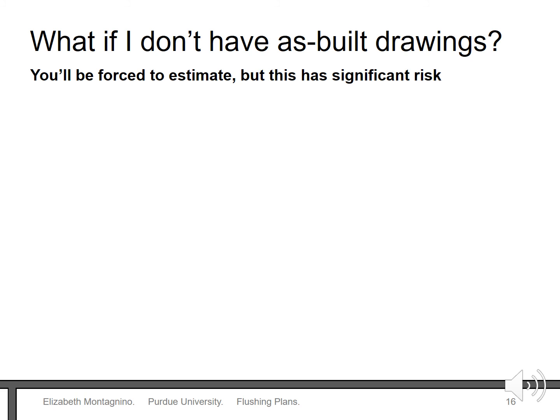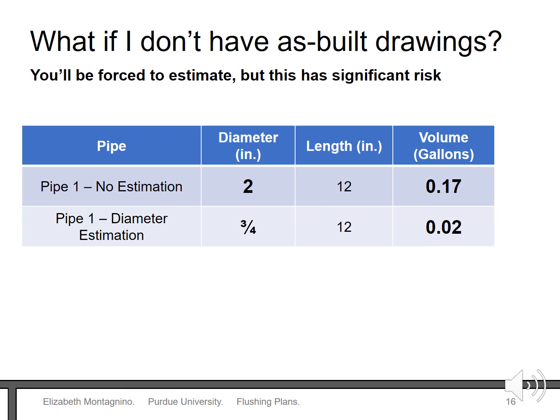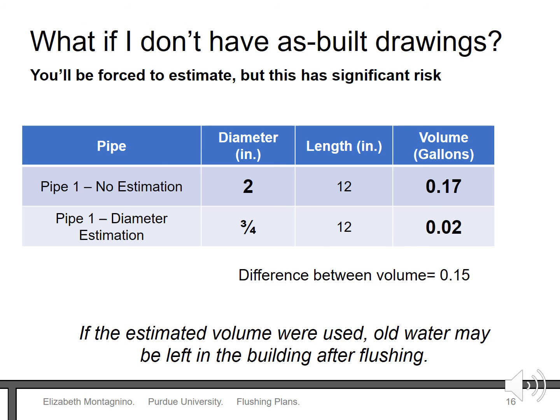If you don't have as-built construction drawings, you're going to have a difficult time designing a flushing plan. For example, we just calculated the actual amount of water in pipes for one location to be 0.17 gallons. If you ignored the different directions the pipes traveled in the wall and their sizes, you could find yourself underestimating the amount of water in the pipes by more than eight times. While you may think 0.02 gallons versus 0.17 gallons isn't a lot, these errors can add up especially for large buildings. If the estimated volume were used, old water may be left in the building after flushing. As-built construction drawings should be delivered to the building owner after every project.